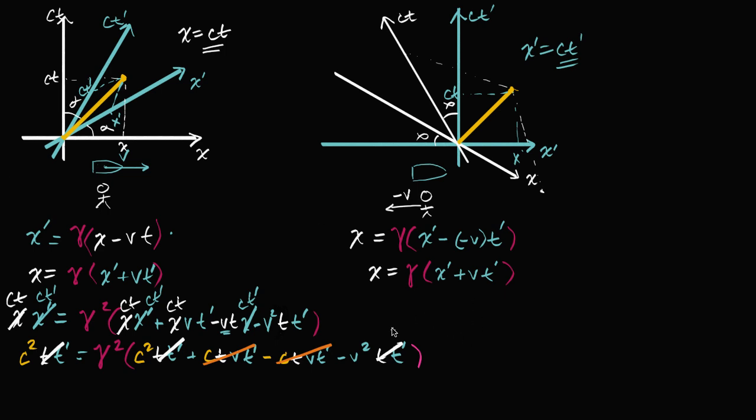Our equation is now c squared is equal to gamma squared, is equal to gamma squared times c squared minus v squared. And now we can divide both sides by c squared minus v squared, and we would get gamma squared. And I'm gonna swap the sides too. So gamma squared is equal to c squared over c squared minus v squared.